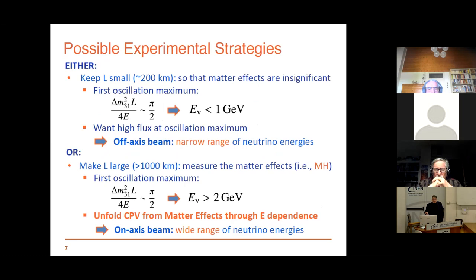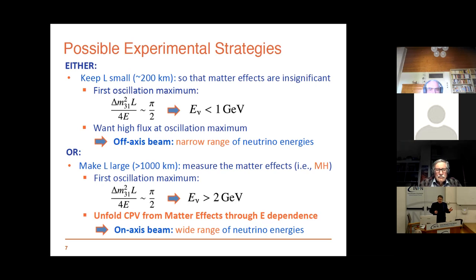The matter effect depends on the mass hierarchy and the energy, and changes sign for neutrino and anti-neutrino. There are two possible strategies: one is to make the oscillation length and therefore the beam energy relatively small and short, so you forget about the matter effect because it becomes negligible — and this is the approach of Hyper-K. Of course you have to wait for somebody to tell you the mass hierarchy before you can declare a CP violation result.